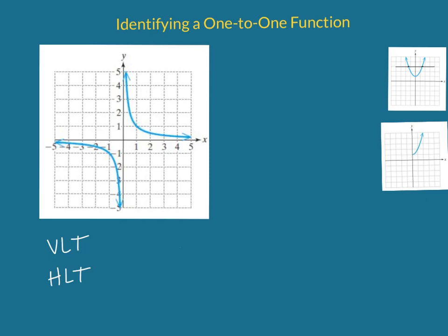Finally, let's take a look at our third graph. This is actually the graph of 1 over x, a rational function. Let's see if it passes the vertical line test. It does — it looks like we almost hit more than once, but this graph is ever so slowly inching toward the y-axis, so it never forms a vertical line. No matter where I draw a vertical line, it only hits the graph once, so this is a function. Now let's perform the horizontal line test. It does pass — no matter how many horizontal lines we draw, they only hit the graph one time. So this one is a one-to-one function.